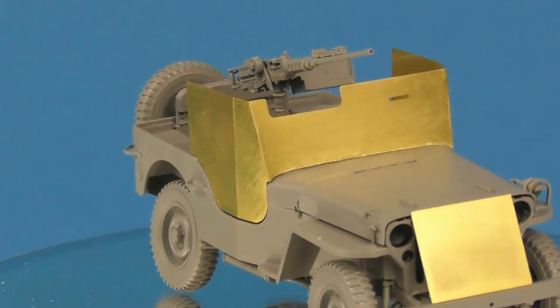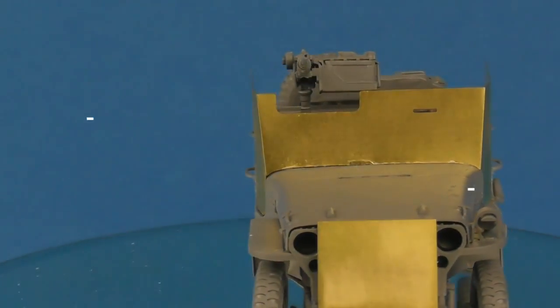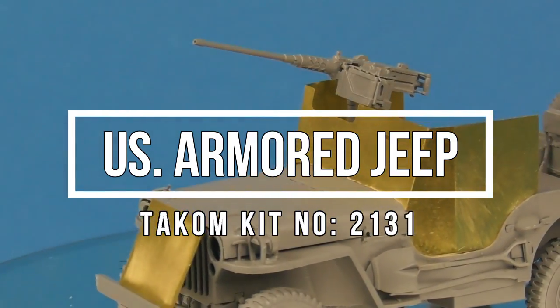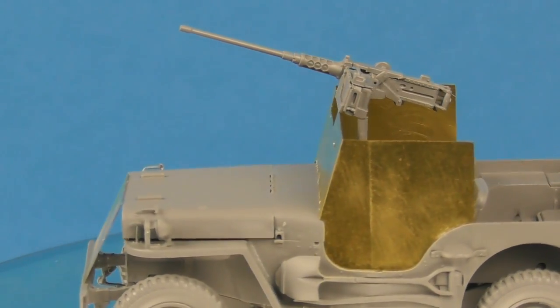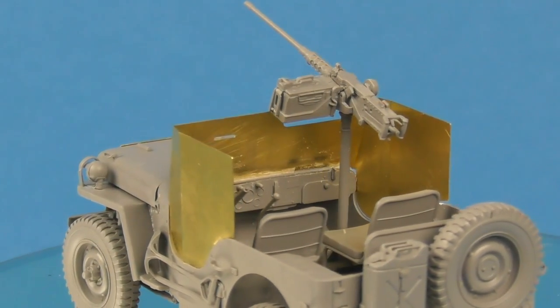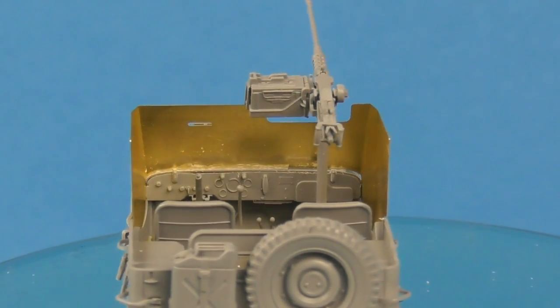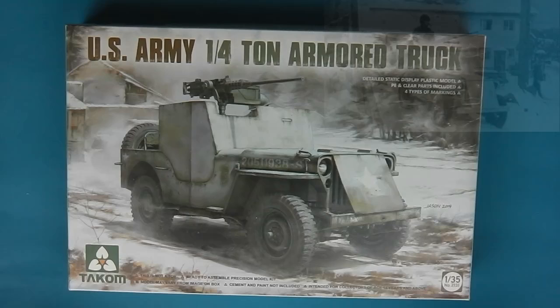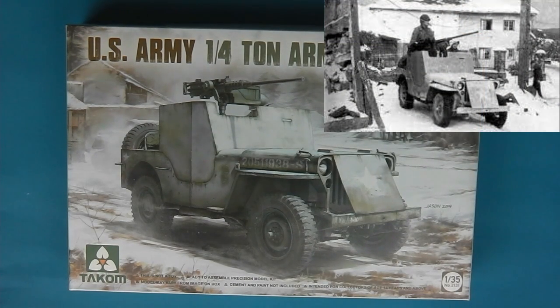Hey guys, Shane here. Welcome to my build video of Takom's US Armoured Jeep. This is their up-armoured version of the quarter-ton Willys Jeep. This kit came out in 2019 or 2020 and this is the up-armoured version based on some examples found in the Ardennes. In this case, this is found with the 82nd Airborne in LaGlaise I believe.